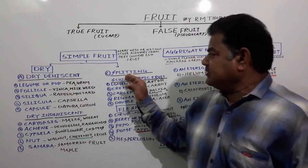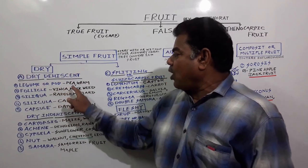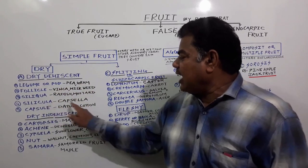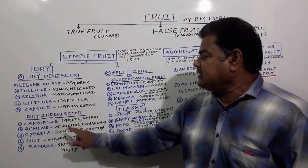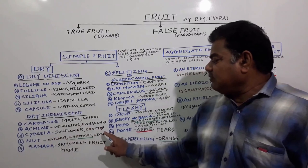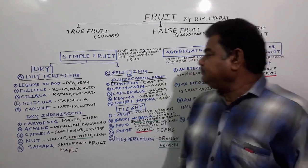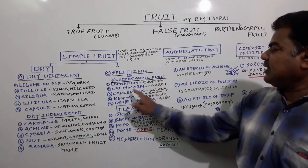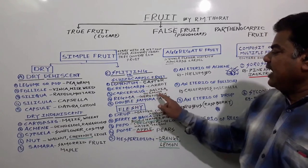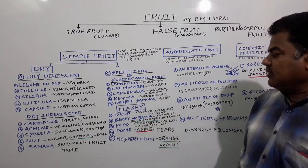Dry dehiscent fruits include legume or pod — pea, gram — follicle — Vinca — siliqua in mustard, silicula, cypsela, and capsule in datura and cotton. Dry indehiscent fruits include caryopsis in maize and wheat, achene in dandelion, cypsela in sunflower and cosmos, and nut in walnut, chestnut, lychee, and samara in maple. Splitting fruits include lomentum in castor, cremocarp in carrot, carcerulus in Salvia, regma in Geranium, and double samara in Acer.